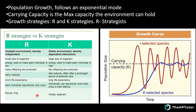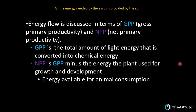Examples of R strategists include mouse or frog. K strategists, like humans, live in a stable environment with density dependent interactions. They have large body sizes, high energy investment per individual, produce few offspring, and have late maturity after a prolonged period of parental care. Humans have an amazingly long parental care period - horses' offspring can run the day they're born, but humans take years. K strategists reproduce more than once and slowly increase toward carrying capacity, then level off.